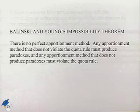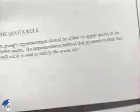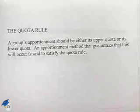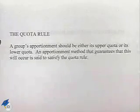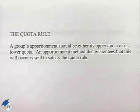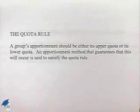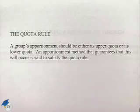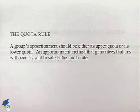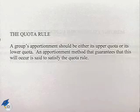Let's look at the quota rule. A group's apportionment should be either its upper quota or its lower quota. An apportionment method that guarantees that this will occur is said to satisfy the quota rule.